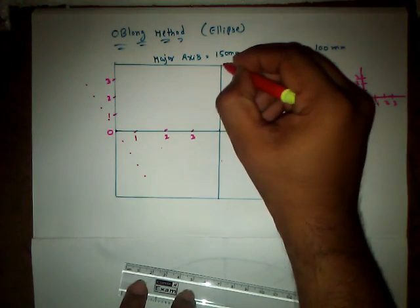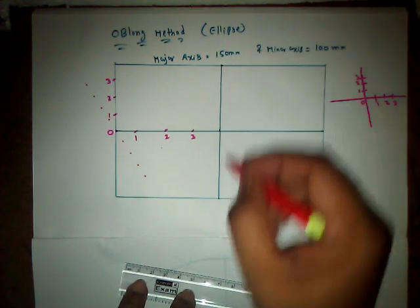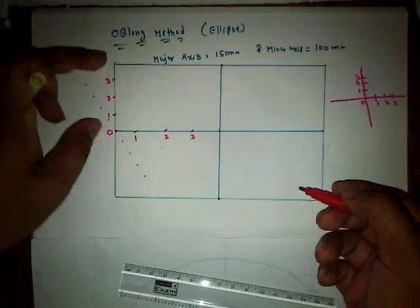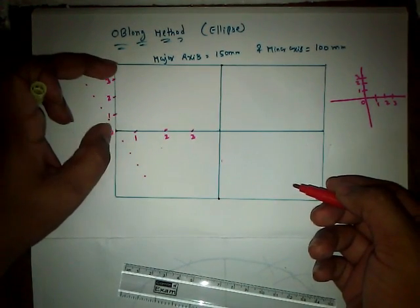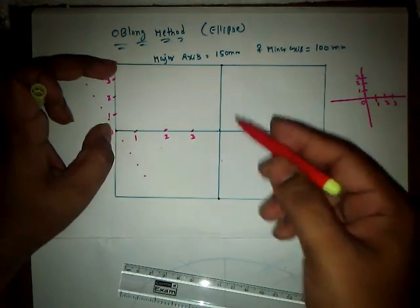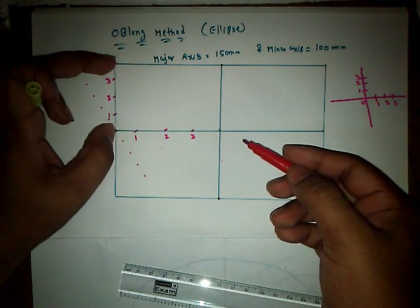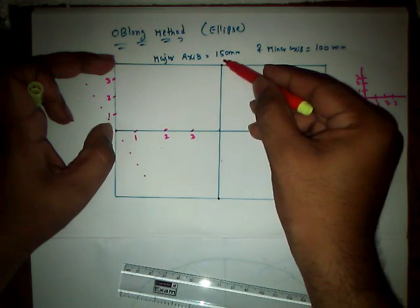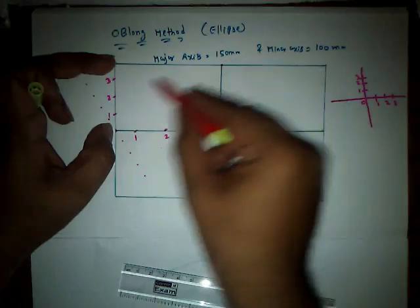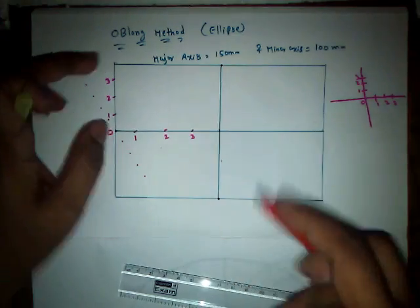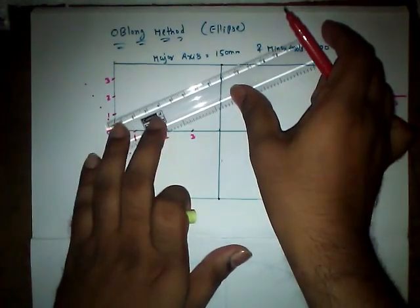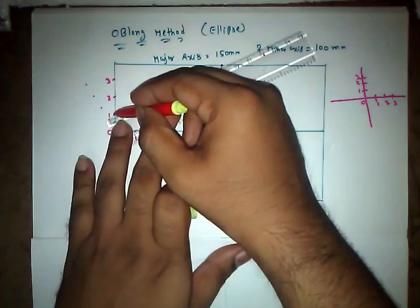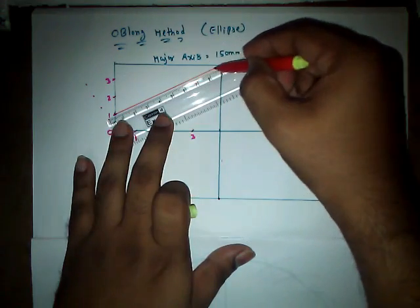Now we have the minor axis end on one side and another minor axis end on the other. We have to join the points on the y-axis to the nearest minor axis end. To this y-axis, the nearest minor axis end is this one. So let us join from point 1 to the minor axis end.